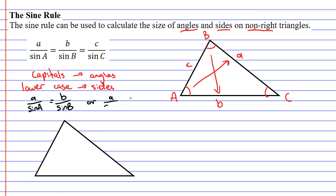So you could have a over sin capital A equals b over sin capital B. Or you could have a over sin capital A equals c over sin capital C. You could also have b over sin capital B. So basically you get to pick the two fractions you would prefer to use.